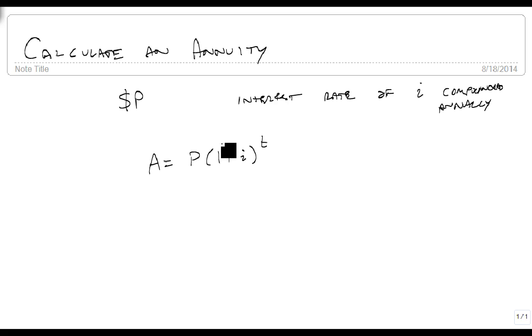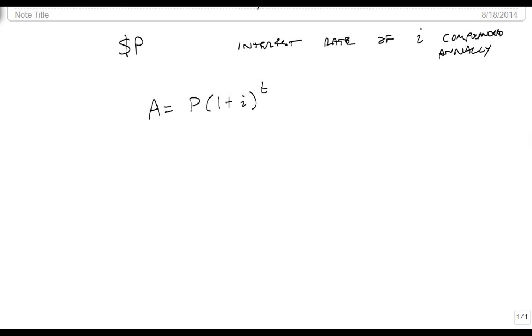But we're making P additional payments. So at the end of this first year, we've put P in. We put another P in, so the amount is equal to P plus the P times 1 plus I. Well, so this is at the end of year 2.